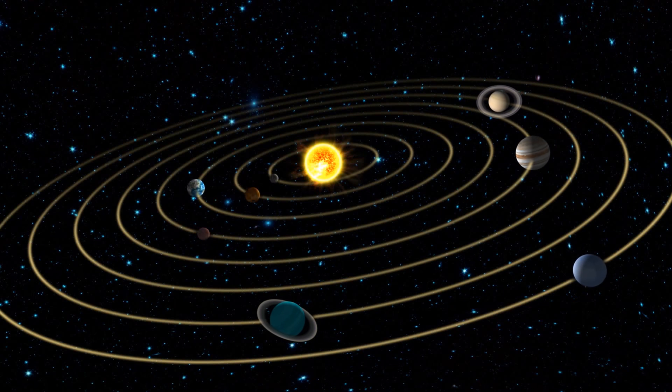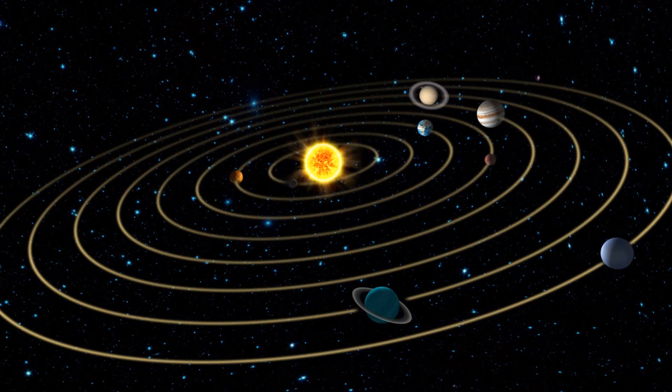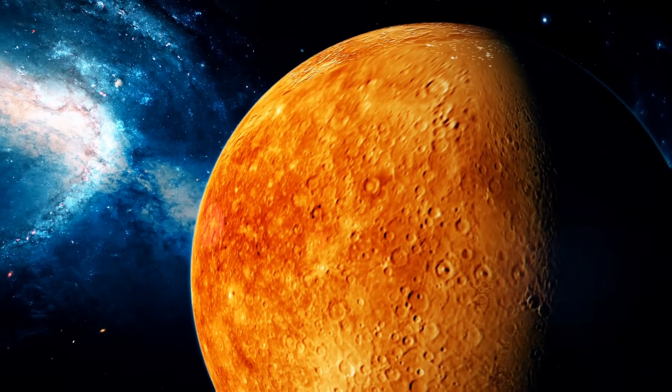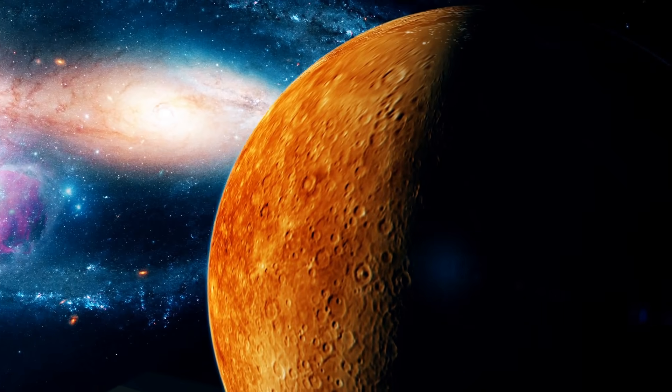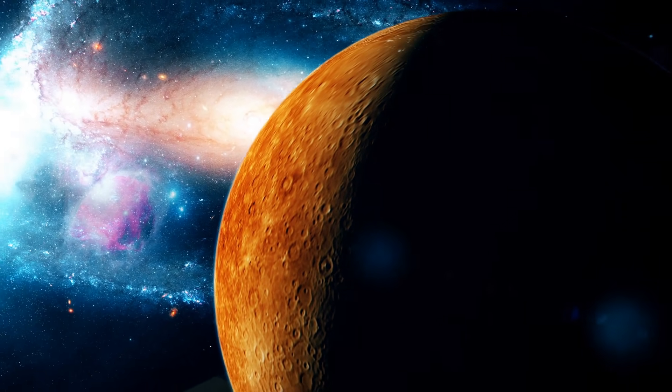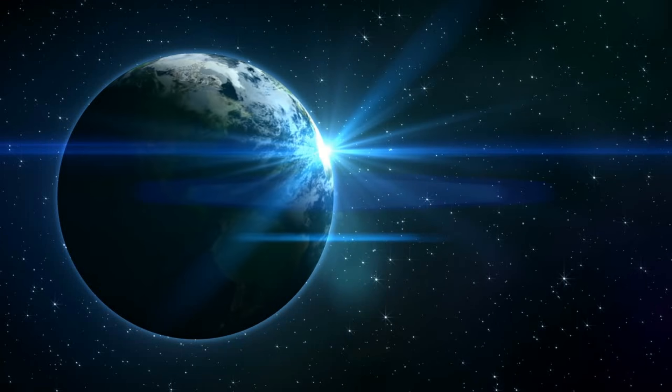It only takes Mercury 88 days to revolve around the Sun, and Mars takes 687 days to go around the Sun. Venus rotates the slowest on its axis of all the terrestrial planets, and actually spins in the opposite direction of all the other inner planets. It takes both the Earth and Mars about 24 hours to rotate on its axis.